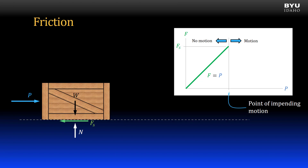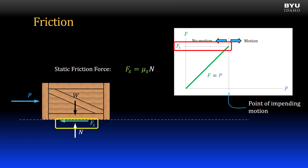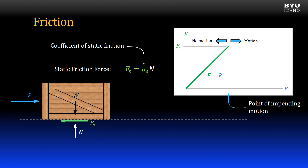At this point of impending motion, the friction force is the static friction force and is equal to the coefficient of static friction — given the Greek symbol mu sub s — times the normal force N. I'll talk more about the coefficient of static friction in just a minute.